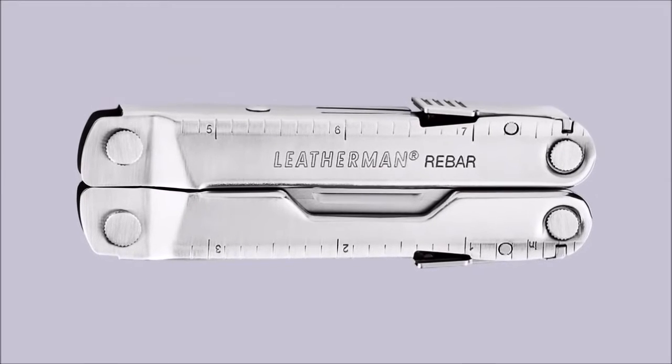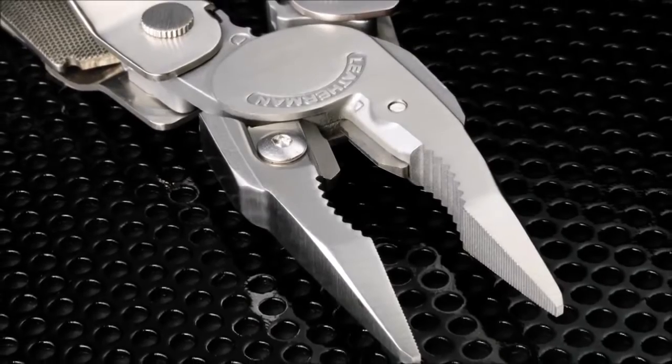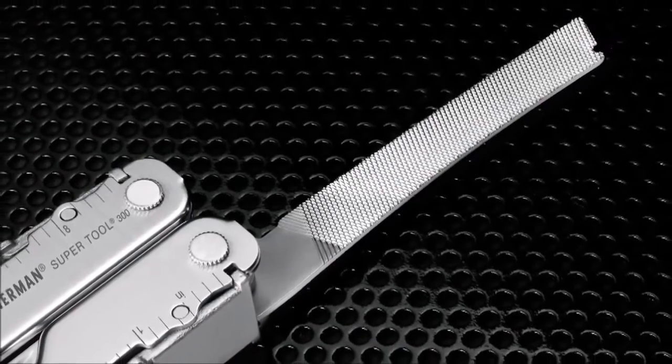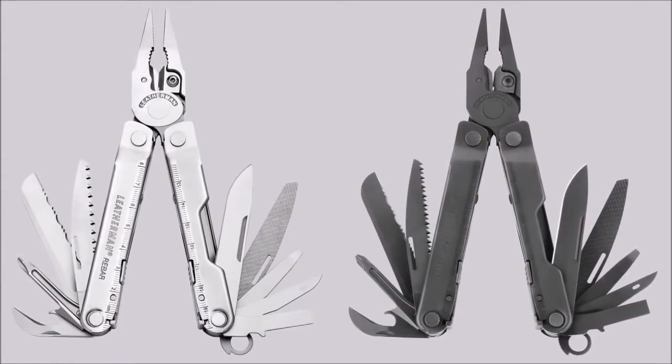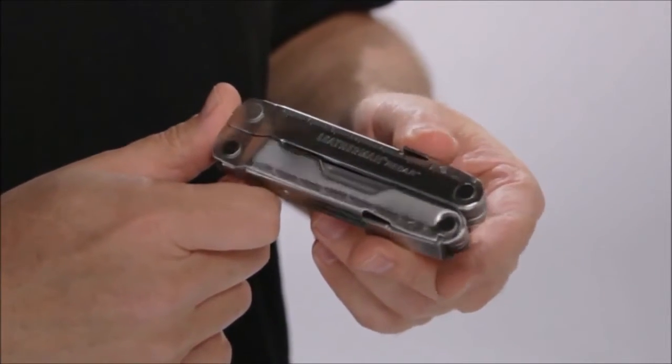Today I'd like to show you some of the unique features of the Leatherman Rebar. The rebar is 100% stainless steel and has 17 features in all. It may look familiar to you because it took its design cues from the popular SuperTool series, but unlike the heavy-duty SuperTool 300, it's only 6.7 ounces and folds up into a mere 4 inches.